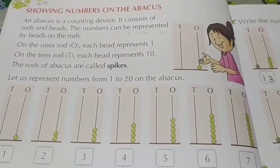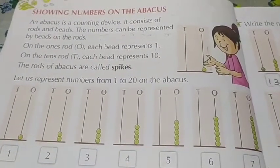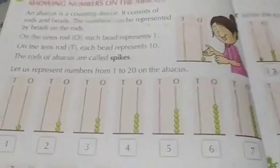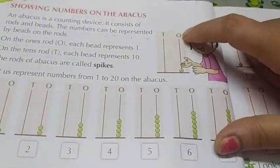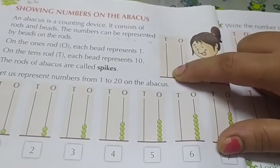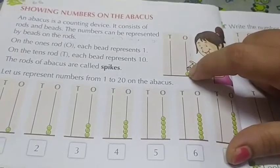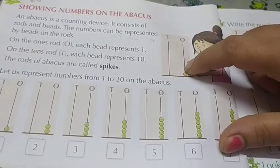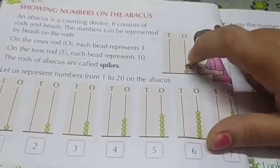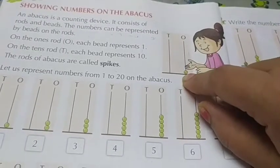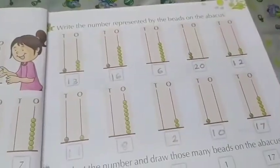I have explained how to calculate maths easily on abacus. So let's recall once again. In abacus, the ones rod and the tens rod are called spikes — these two are the rods of abacus. This one is the bead and this one is the rod. We can represent numbers on this rod through the beads.